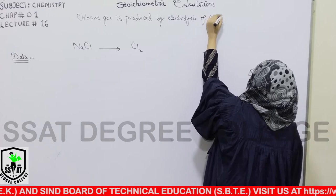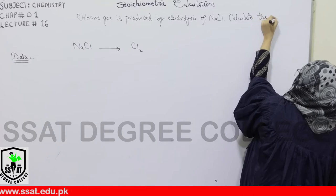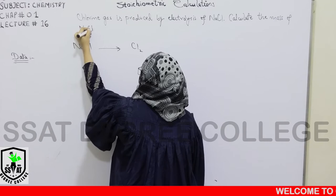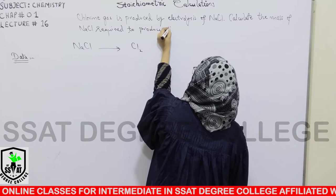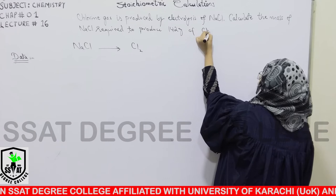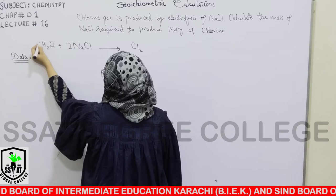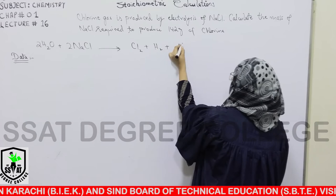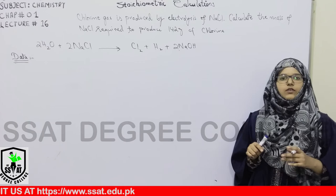The objective is to calculate the mass of sodium chloride required to produce 142 grams of chlorine. We use the electrolysis equation — because we are making an aqueous solution, we mix it with water, and the products are hydrogen, chlorine, and sodium hydroxide. Now let's look at this step-wise calculation. The given data tells us how much chlorine is being made, and we need the mass of sodium chloride.